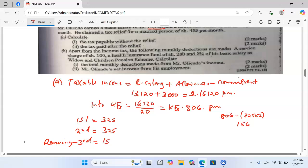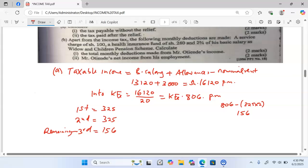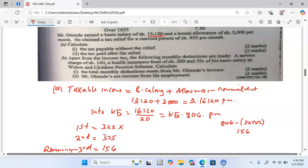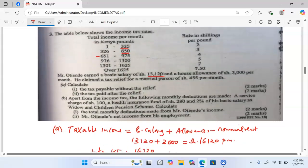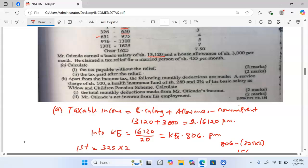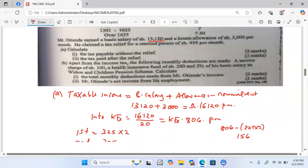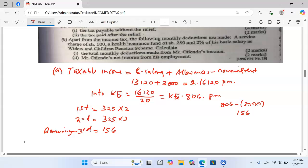And that is the remaining pounds that we are going to tax in the third bracket. Now, we can calculate tax by multiplying by the rates given. In the first bracket, the rate is 2 shillings. In the second, we have 3. And in the third, we have 4. So, whatever amounts we get on this other side will give us the gross tax.